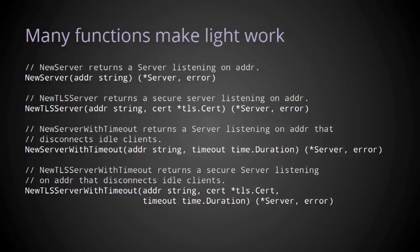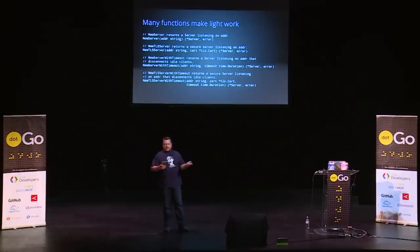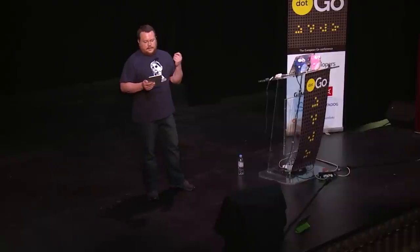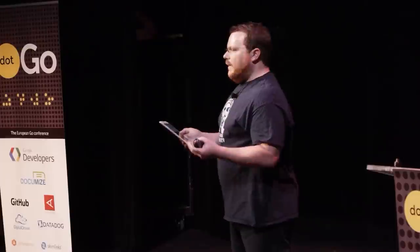So now I think I've defined the problem. I want to look at some of the solutions. Rather than trying to provide one single function catering for every possible permutation, one solution might be to create a set of functions. With this approach, when the caller wants a secure server, they can call the TLS variant. When they want to establish a maximum duration for clients, they can call the timeout variant. Unfortunately, as you can see, providing every possible permutation can quickly become overwhelming.